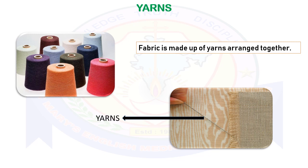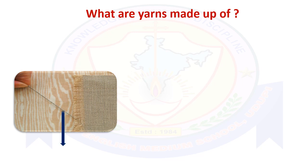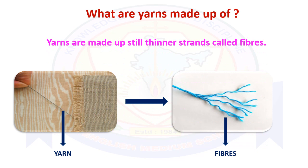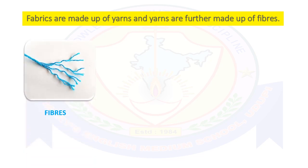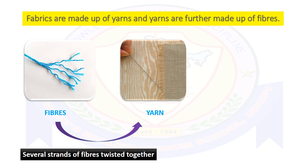Now let's study more about yarns. What are yarns made up of? Scratch one end of the yarn you took out from the fabric and observe it carefully. You will notice that the yarn splits into many thinner strands — these smaller, thin strands are called fibers. Thus, yarns are made up of still thinner strands called fibers. In other words, several strands of fibers twisted together make yarns, and yarns arranged together make fabric.